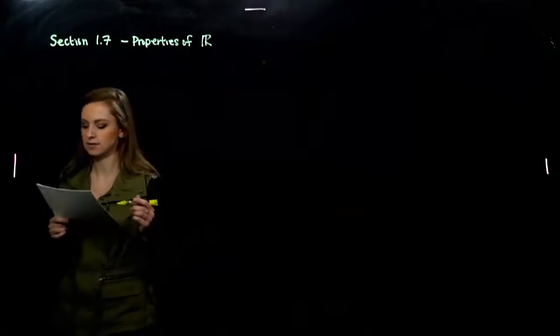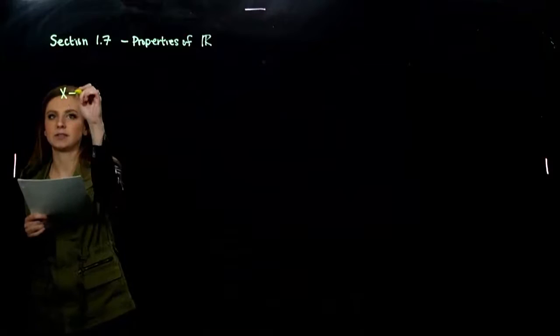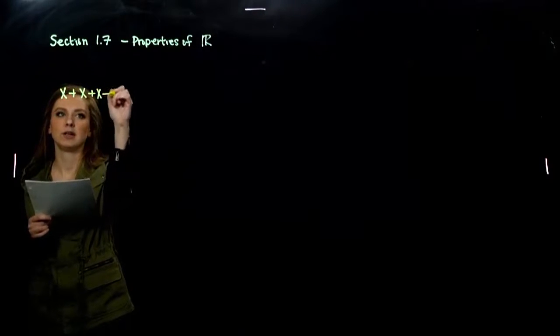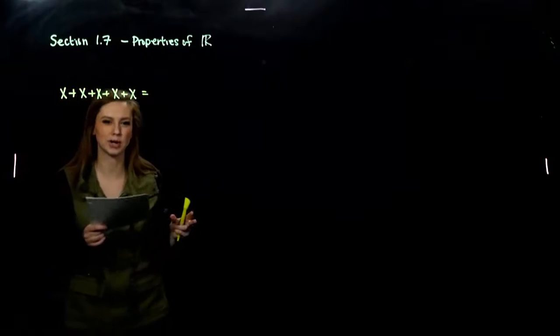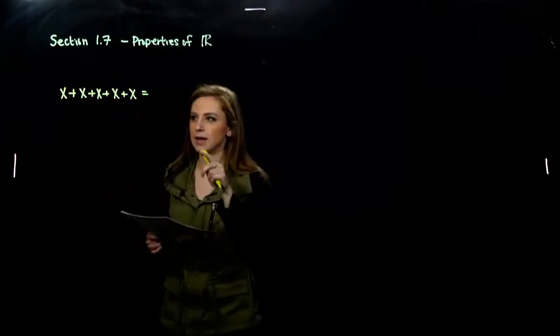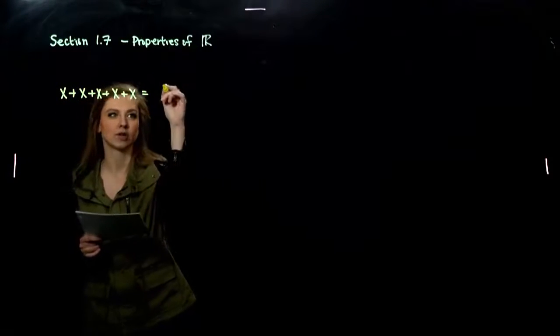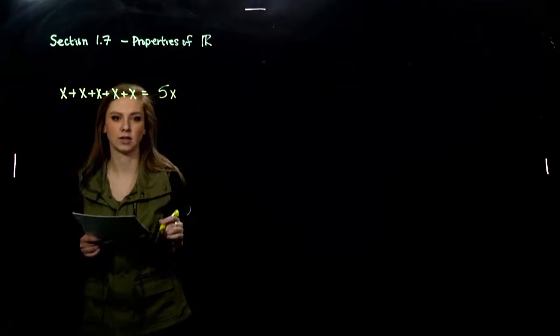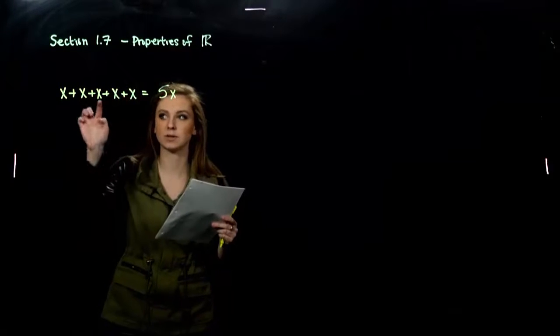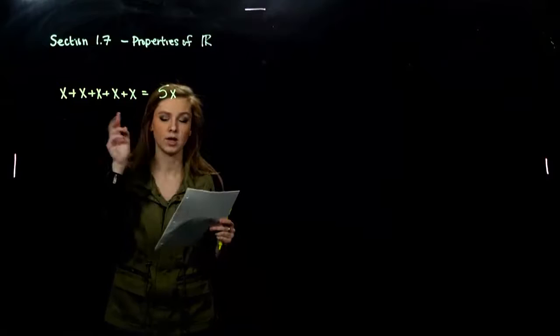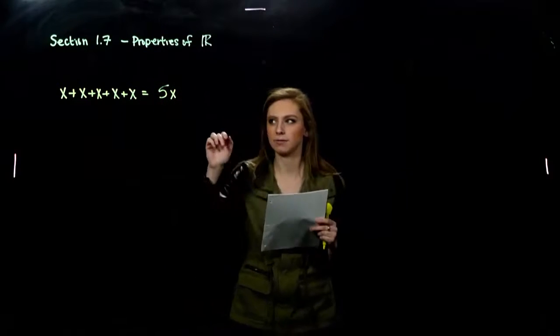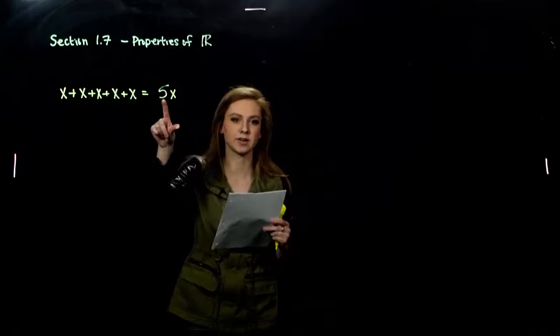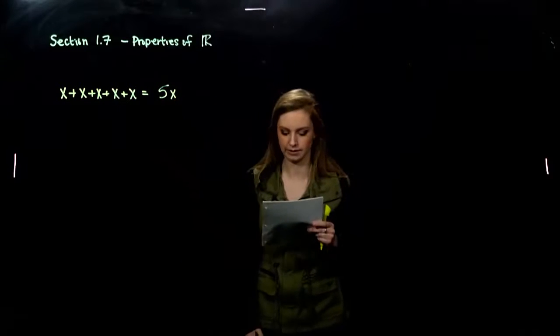So that first example, for instance, x plus x plus x, and we have three, four, five of them. How could I rewrite that in a more condensed way? I have five terms of x that are involved, and we have addition. So it's not x to the fifth. If they're being multiplied, we could do that, but addition. So I have five factors of x. That's what that's telling us.